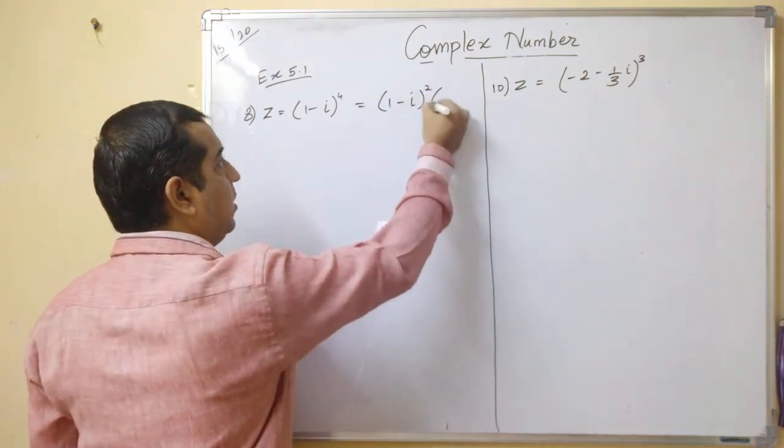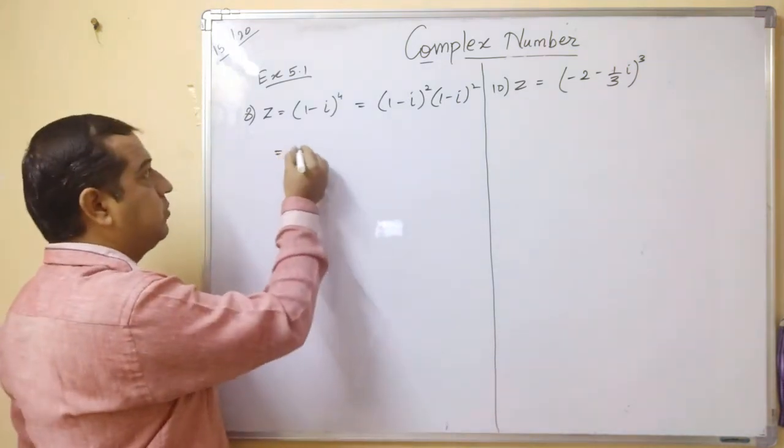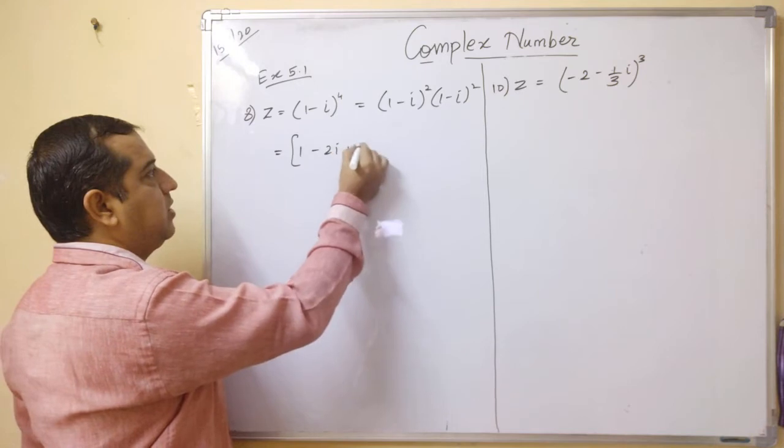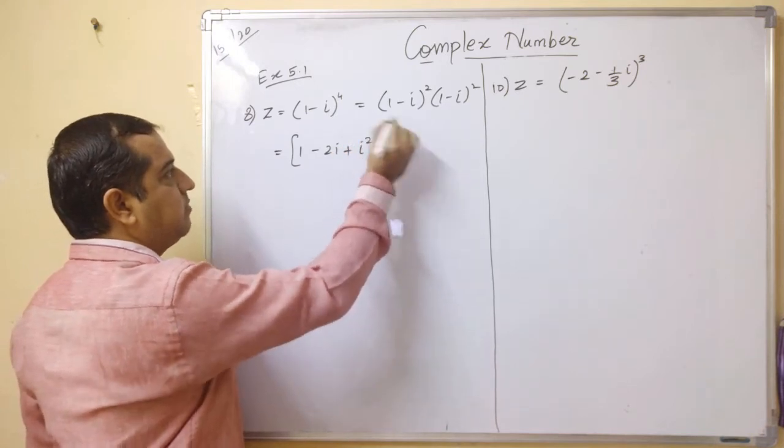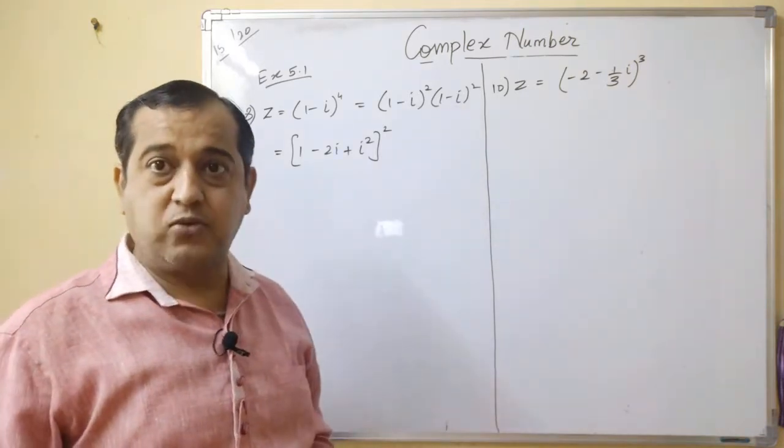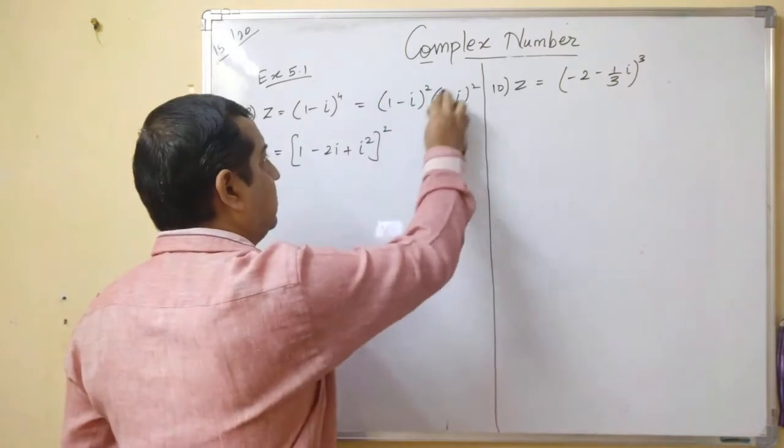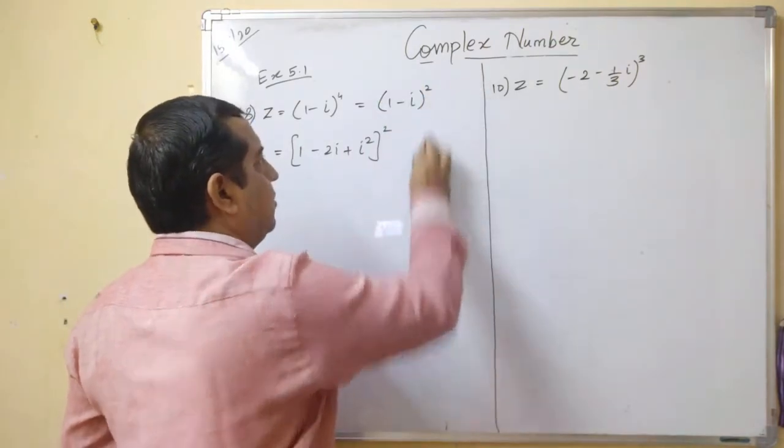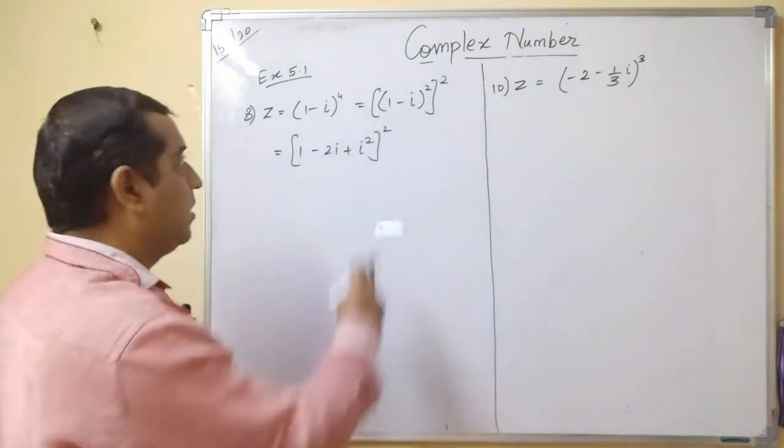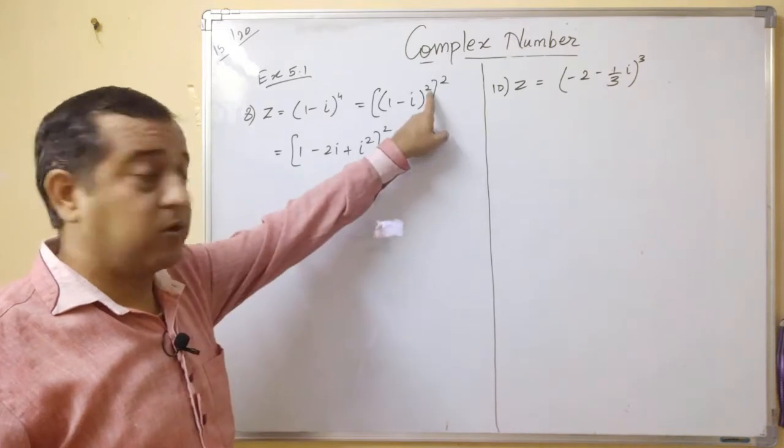You can write this as 1-i square into 1-i square. Then this gives you 1-i square, it is nothing but 1-2i plus i square, or you can write the bracket square. Why? 1-i square into 1-i square means 1-i square ka bracket square. In short, you can write this into this form.